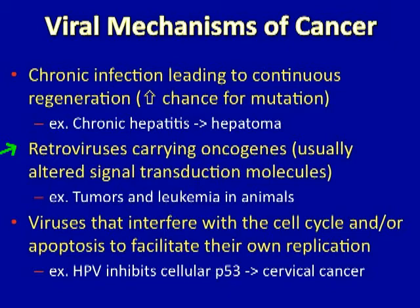The second mechanism is not seen as much in human beings as in animals. It involves retroviruses that may have picked up genes for signal transduction molecules from their host cells. When these genes are incorporated in the retrovirus, they may then be expressed in an unusual way when the retrovirus infects the cell. Since signal transduction molecules often stimulate growth inside the cell, these genes — once introduced via the retrovirus — can induce malignant transformation. Tumors such as sarcomas or leukemias can be induced with certain viruses in animals.